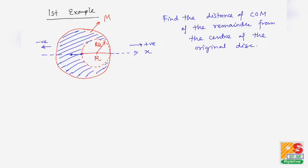The question is: find the distance of the center of mass of the remainder from the center of the original disc. Here m0 is M, because the total mass of the disc is given as M. I define the origin as the center of the original intact disc, so it has a coordinate of 0.